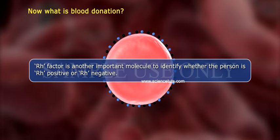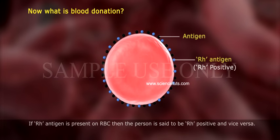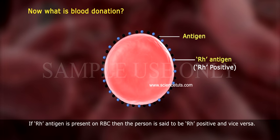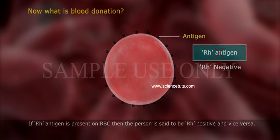Rh factor is another important molecule used to identify whether a person is Rh positive or Rh negative. If the Rh antigen is present on RBC, then the person is said to be Rh positive, and vice versa.